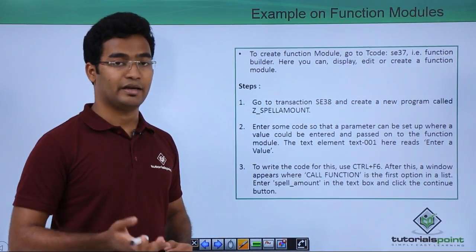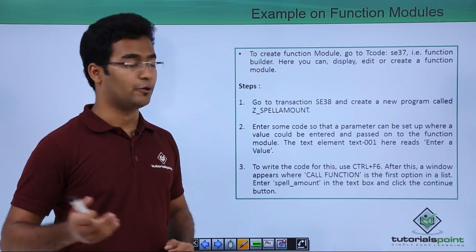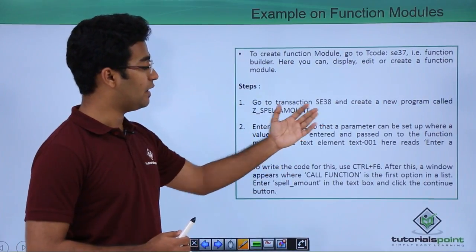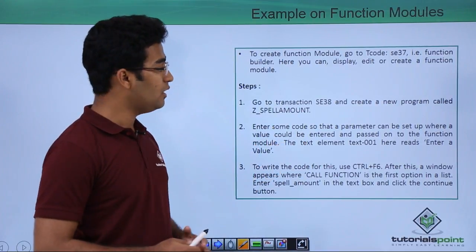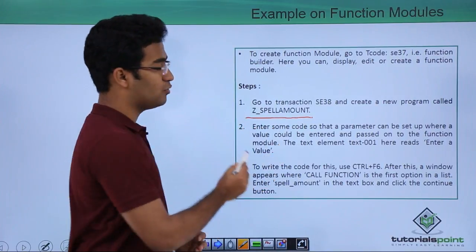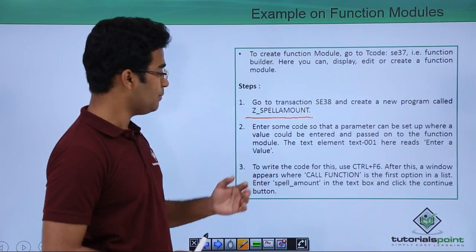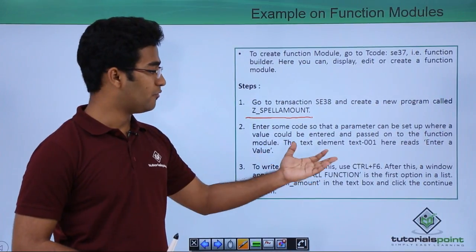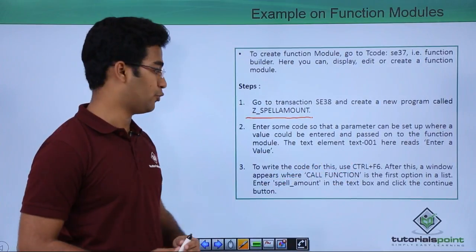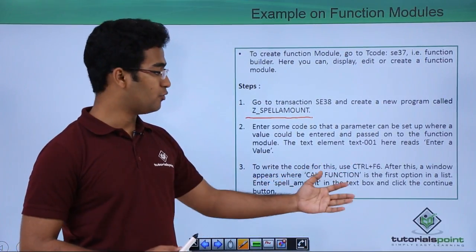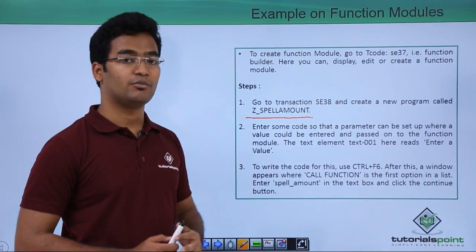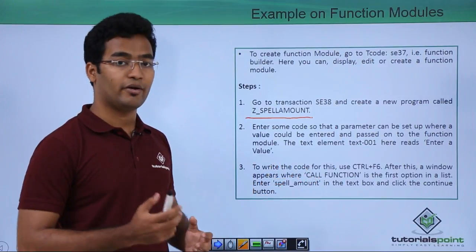So it is converting numbers into readable text like 123. For that, we have to create a program and go to SE38, that is the ABAP editor screen. We are creating a simple program named Z_SPELL_AMOUNT. Here we have to enter some code so that we can make it a parameter and pass it as an input to our function module. We will use the SPELL_AMOUNT predefined function module and call it.